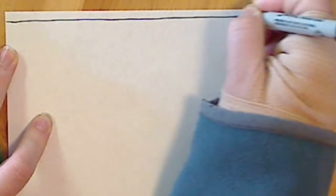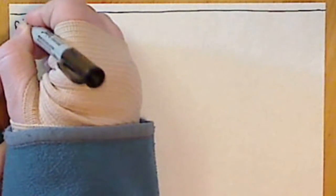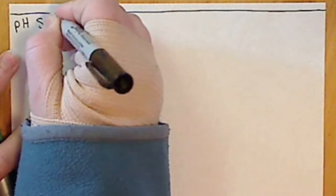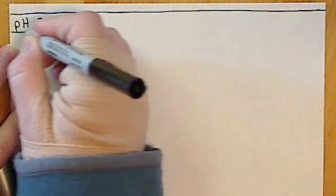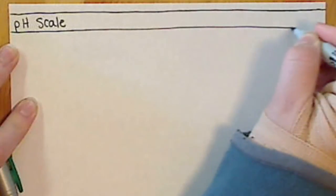In the previous video we worked with the equilibrium constant expression and value for water, and you looked at calculating the concentration of OH⁻ given a concentration of H₃O⁺, and then you compared those two concentrations in order to determine whether or not we had an acidic or basic solution.